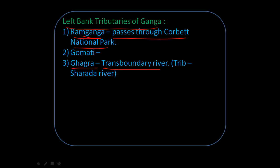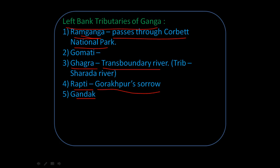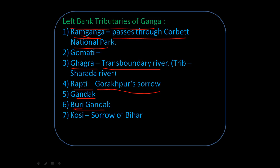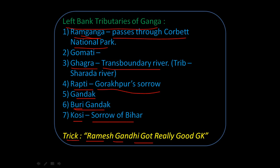Then Rapti, also called the 'Gorakhpur Sorrow'. Then the Gandak, then the Buri Gandak — called Buri Gandak because it follows the older river basin of the Gandak. And finally Kosi, the 'Sorrow of Bihar'. The mnemonic is 'Ramesh Gandhi got really good GK': R for Ram Ganga, G for Gomti, G for Ghagra, R for Rapti, G for Gandak, G for Buri Gandak, and K for Kosi.